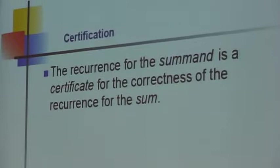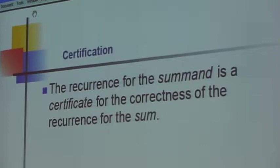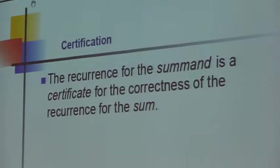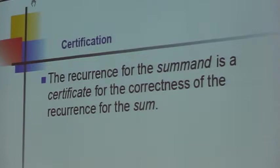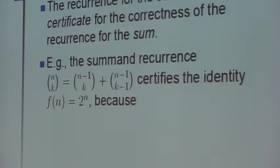The recurrence for the summand is a certificate for the correctness of the recurrence for the sum. By this I mean that you don't have to take the computer's word for it that it correctly found the recurrence, or that the sum satisfies the recurrence that the computer claims it satisfies. This thing certifies it in the sense that a human could have said it. The summand recurrence certifies the identity because it's trivial to prove the summand recurrence—that's easy.